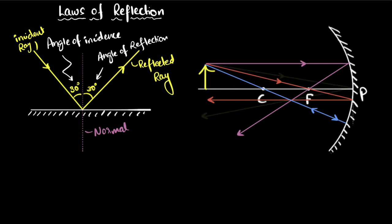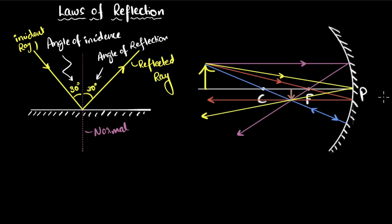The fourth ray is shot right at the pole. The principal axis, passing through the center of curvature, acts as the normal here. We ensure the reflected angle equals the incident angle and draw the reflected ray. All four reflected rays pass through one common point, and that is where our image is going to be. The image is between C and F — it's diminished, inverted, and inverted images are always real images that can be captured on a screen.